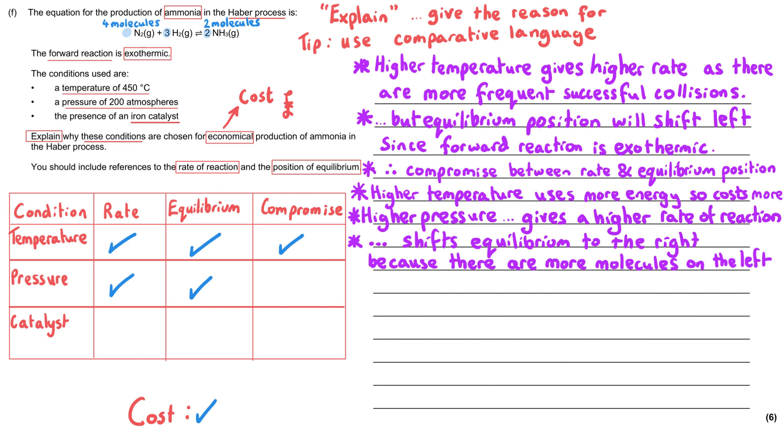So it seems like a high pressure is great in terms of the rate of reaction and in terms of the equilibrium position and therefore the yield of ammonia that we produce. However...